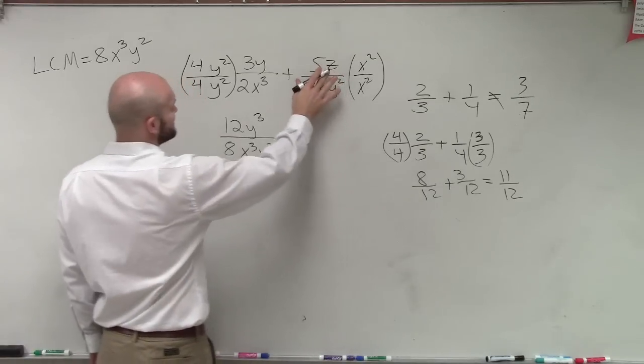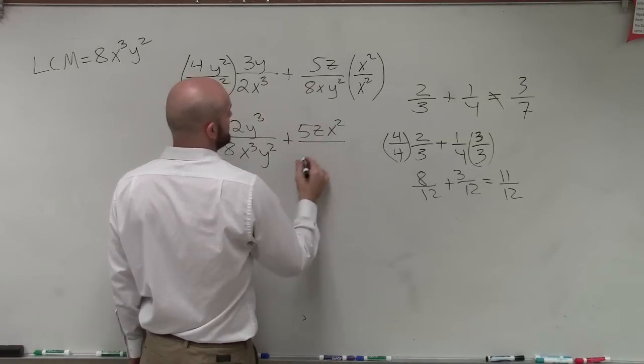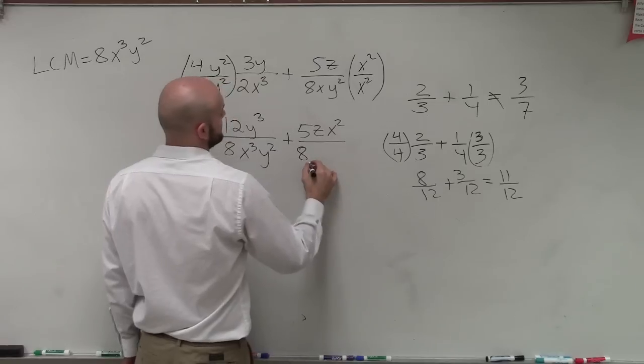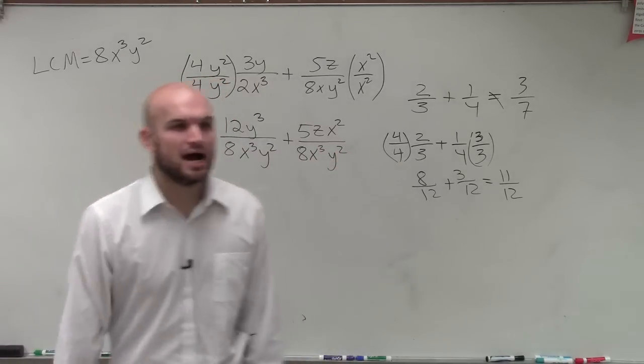So up top I get 12Y cubed divided by 8X cubed Y squared plus 5ZX squared divided by 8X cubed Y squared.